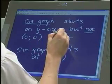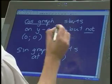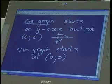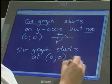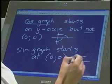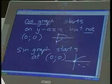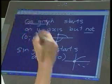So the cos graph will start somewhere on the y-axis. Maybe there, maybe there, but not at zero zero. Whereas a sin graph will always start at zero zero. Start at zero zero and go up or start at zero zero and go down. So another piece of information which you must know.